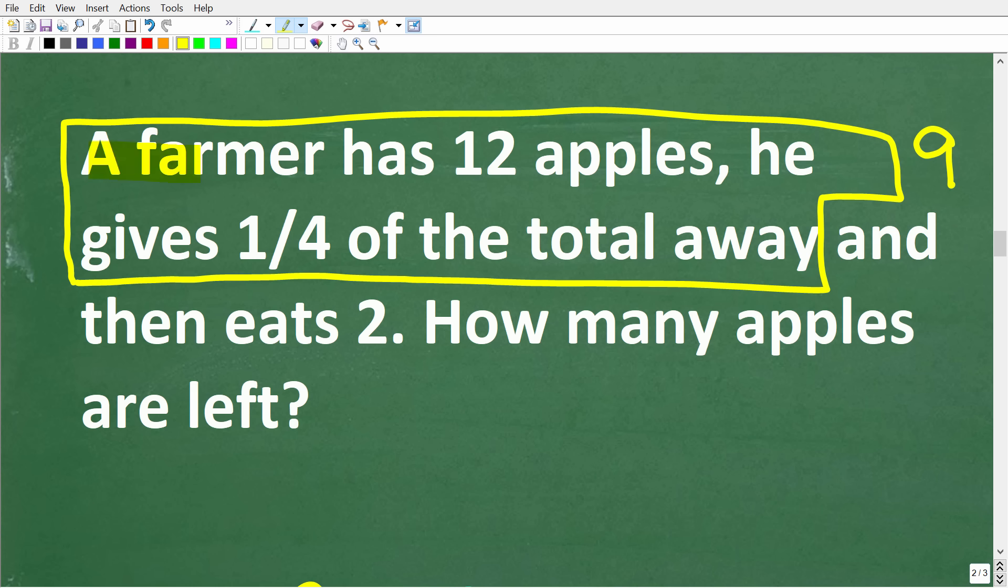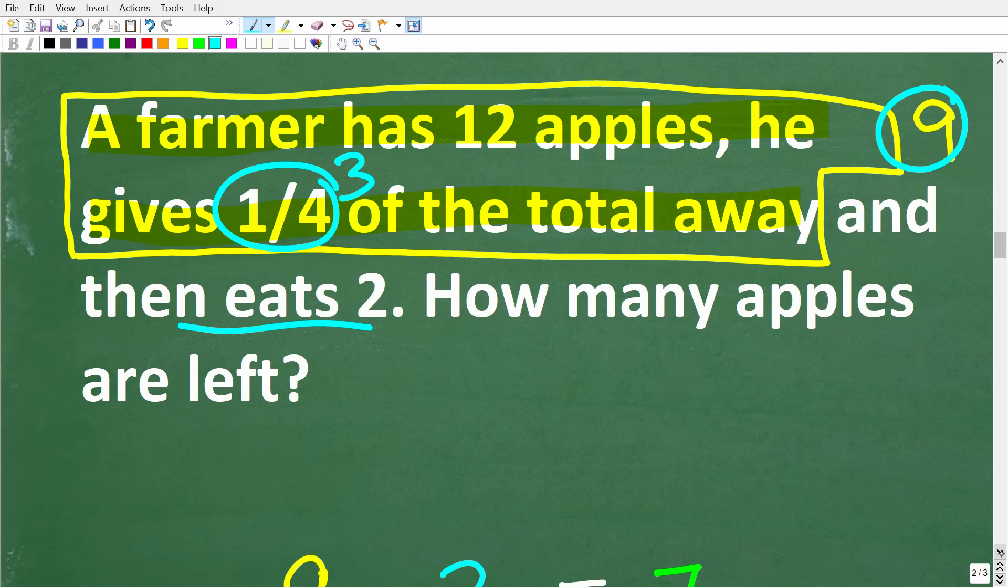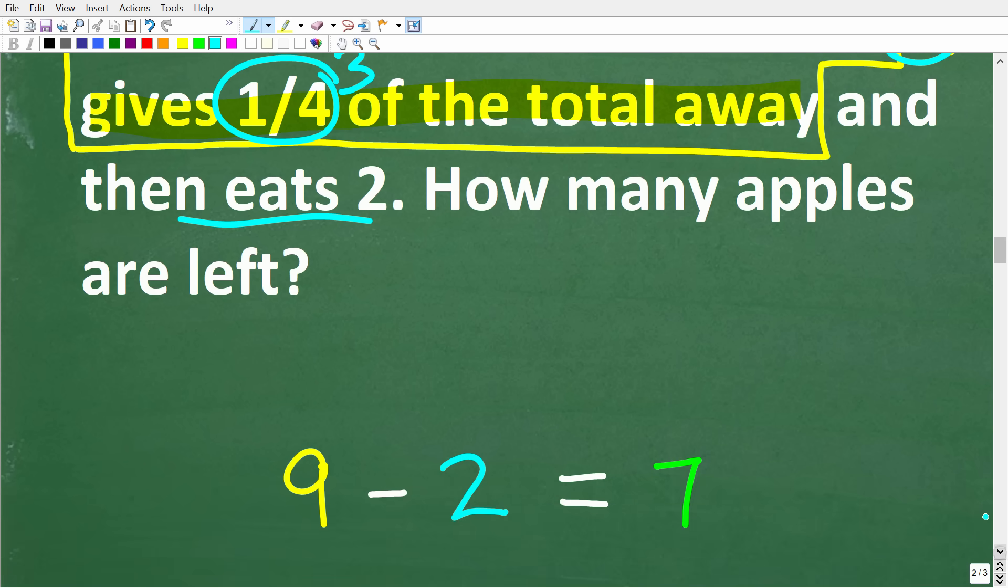So step one, again, was to put all of our focus and energy on figuring out how much is one-fourth of 12 apples. Right. So if a farmer has 12 apples, he gives one-fourth away. Of course that's three. So he's left with nine apples. So part two of this problem is how many apples remain after he eats two. So this is kind of the easy part, right? So if he eats two apples, how many apples remain? Well that's simply going to be nine minus two or seven apples.